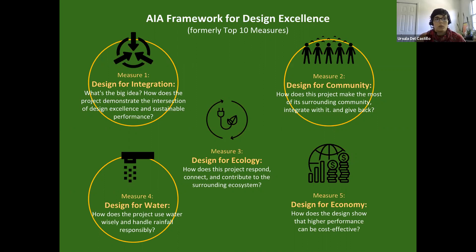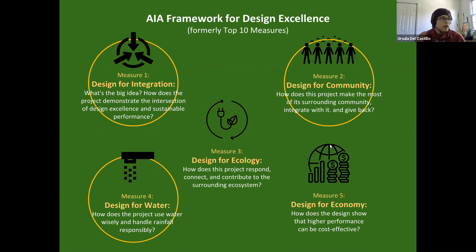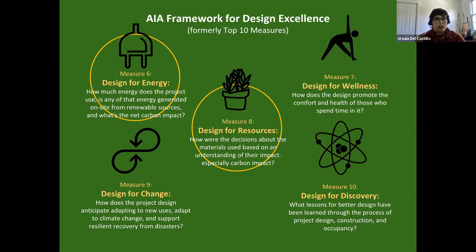Design for water asks how we can design a building that conserves and improves water quality, respects water streams around the building, and addresses stormwater management strategies. Design for economy focuses on appropriate construction cost and life cycle cost information so it can influence design choices — if it's not economically sustainable, it won't be sustainable. Design for energy asks how much energy the project uses, whether any is generated on site or off site, and whether we're using renewable resources.